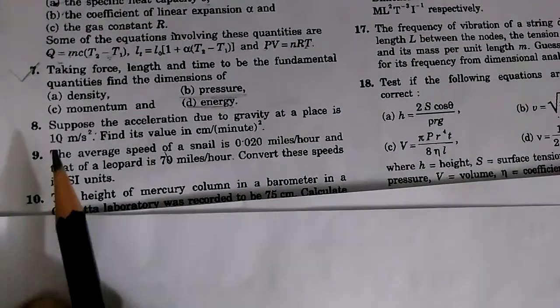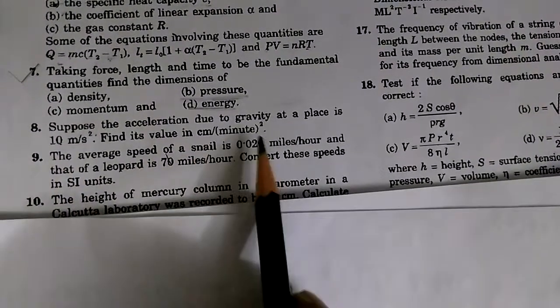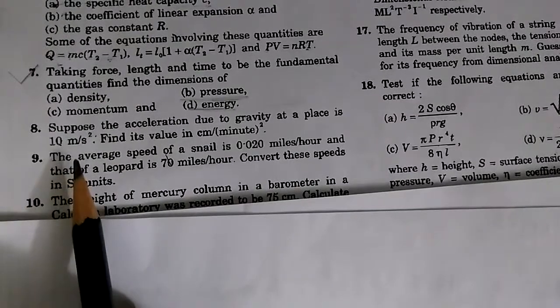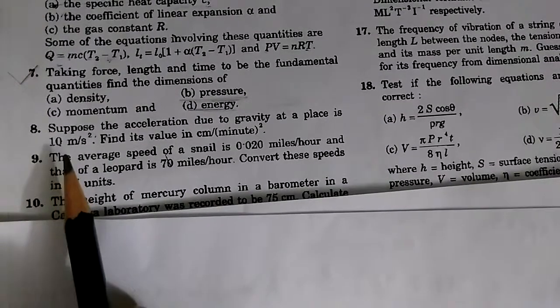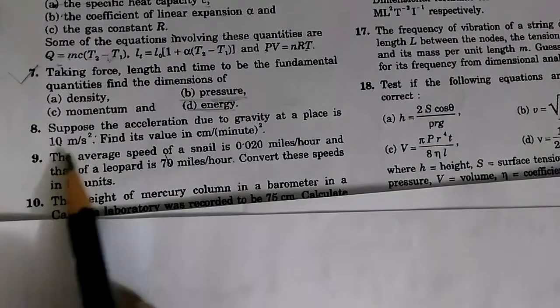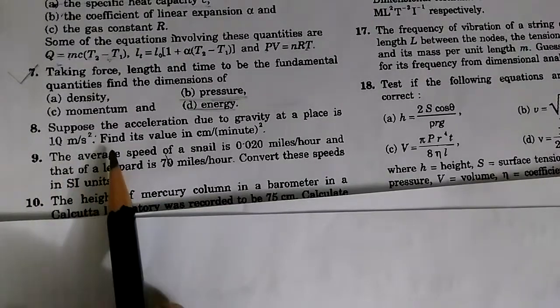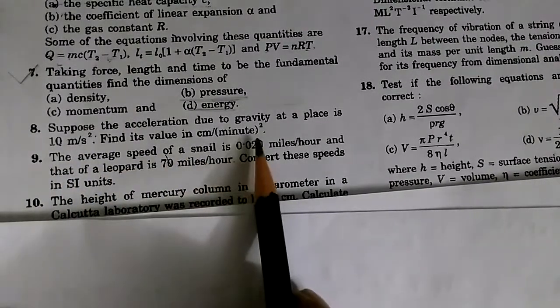Question number 8: it says that suppose the acceleration due to gravity at a place is 10 meter per second square. It is 9.8, but for the problem's sake, assume it to be 10 meter per second square. Find the value in centimeter per minute square.